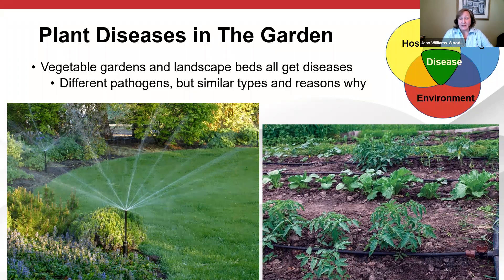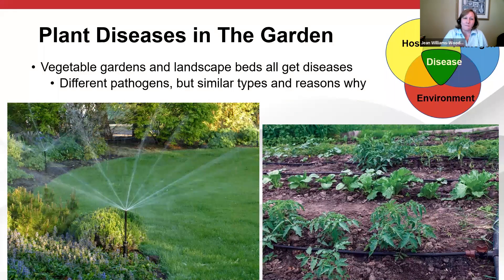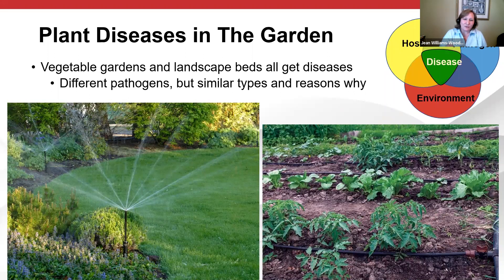There is no way for me to tell you about every single disease that's ever going to affect a plant within the time given. Diseases, whether in a vegetable garden or a landscape bed, everything will get a disease. Even though every plant would get a disease, there are different pathogens that affect different plants, but they all are similar types and they all get disease for the same reasons.